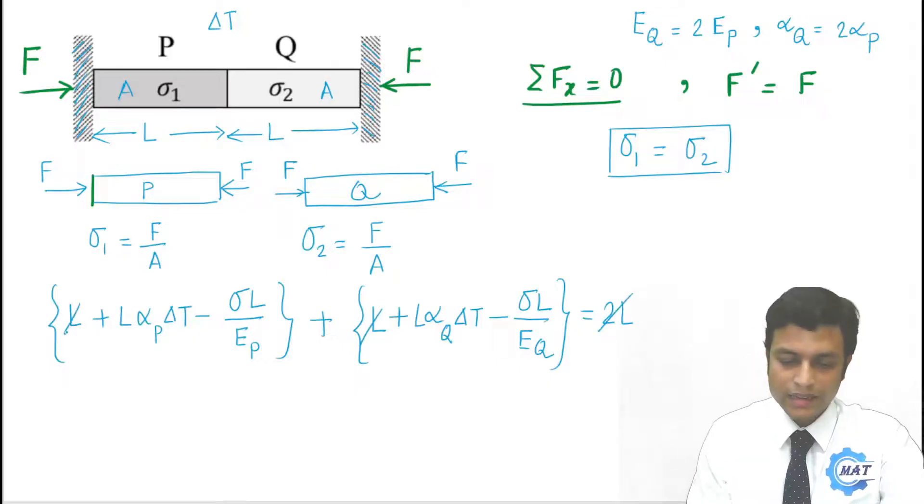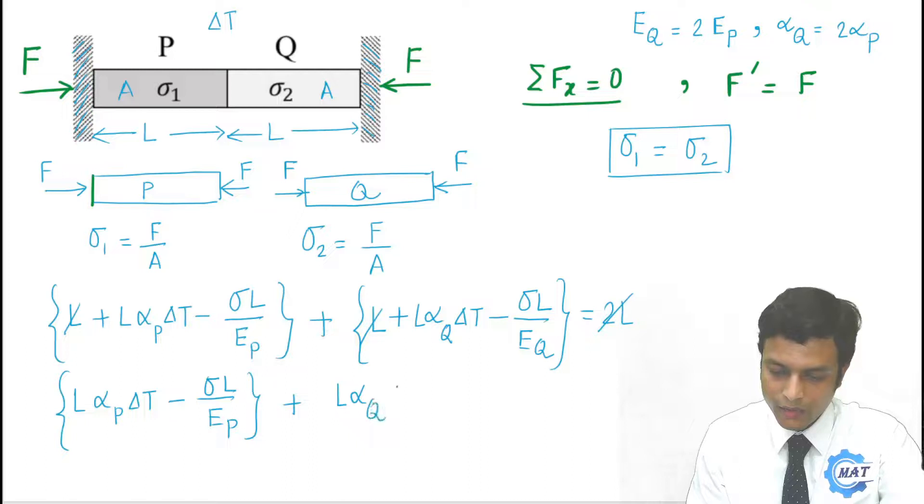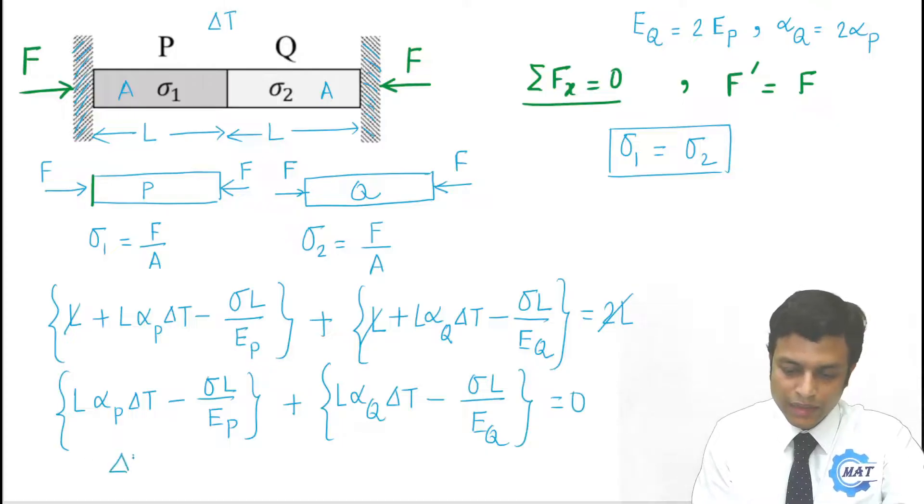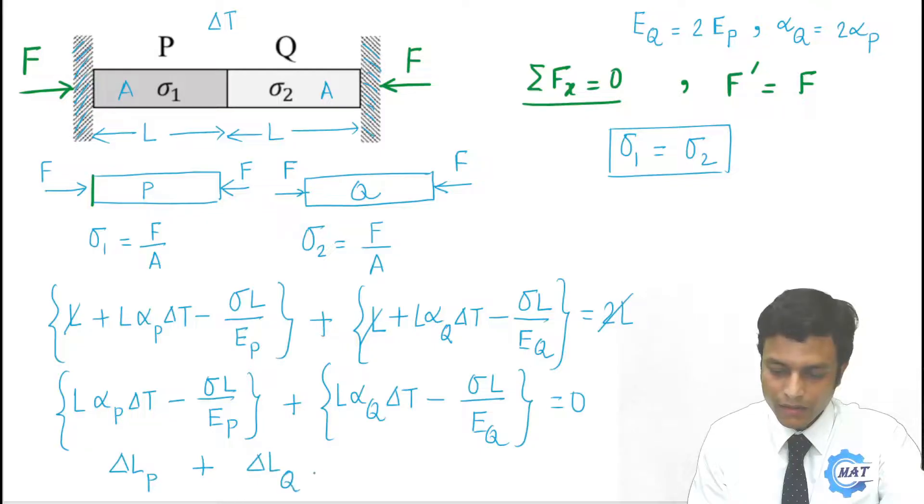This 2L and this Ls are cancelled. Now we can write L alphaP delta T minus sigma L by EP, this is change in length of P, and L alphaQ delta T minus sigma L by EQ. So these two become 0. That is, change in length of P plus change in length of Q is 0.